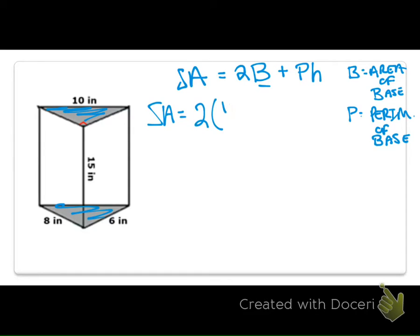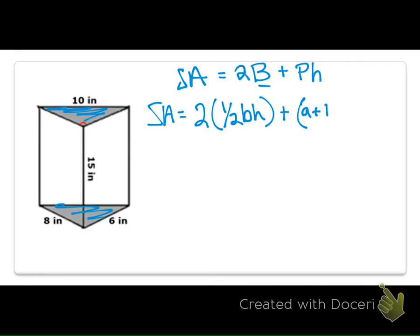I'm going to have 2 times 1 half base times height, plus my perimeter. Plus my perimeter, which I'm just going to add all the sides. I'm going to say, stealing a little bit from Pythagorean theorem, A plus B plus C times the height. Okay, so here's my full setup, and this is going to work for my triangle. The beauty of this formula is that it's going to work for different shapes, too. The only thing that's going to change is how you find the area of the base or how you find the perimeter. So, let's go ahead and get to work here.